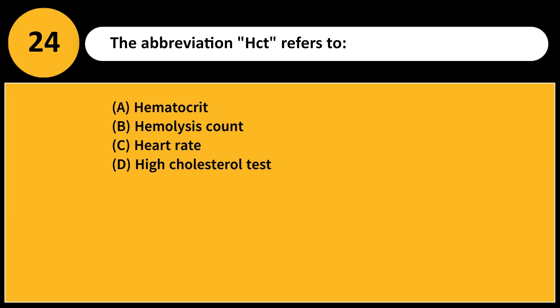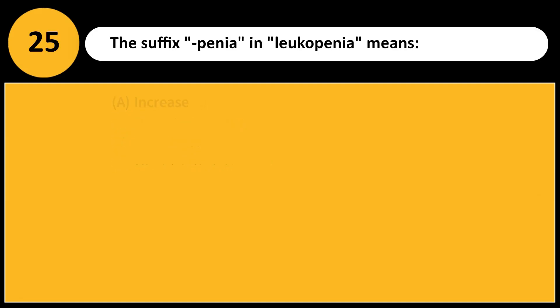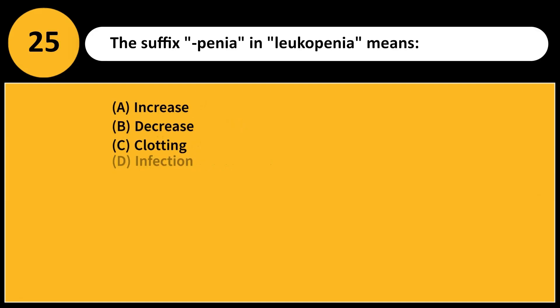The abbreviation HCT refers to: A. Hematocrit B. Hemolysis count C. Heart rate D. High cholesterol test. Answer: A. Hematocrit (HCT) measures the percentage of red blood cells in the blood.